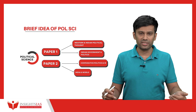A common doubt is: who can opt for political science? There is a myth that people without a humanities background — from engineering, medical, or commerce backgrounds — cannot opt for a humanities subject. This is not true. Many people from engineering and medical backgrounds have taken political science and have in fact performed better than those from a political science background. This optional can be chosen by anyone interested in Indian politics or international relations.